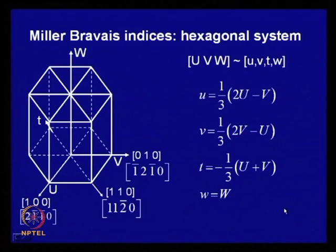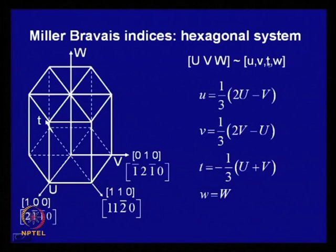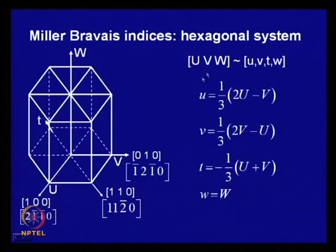The same extension applies to directions using a four-index system u, v, t, w where t is redundant and equals minus one-third of (u + v). Capital U, V, W are the normal Miller indices and lowercase u, v, w is the Miller-Bravais system. With this conversion, all equivalent directions have identical or similar indices, which allows matrix calculations, vector calculations, and geometric representation of crystal planes and directions in a projection.